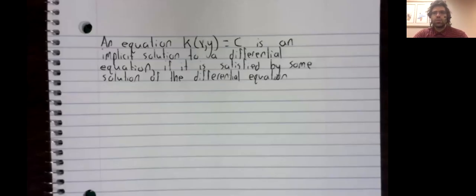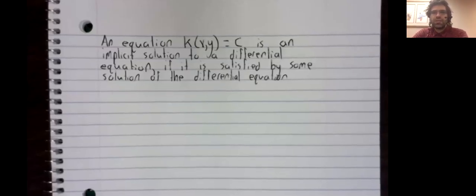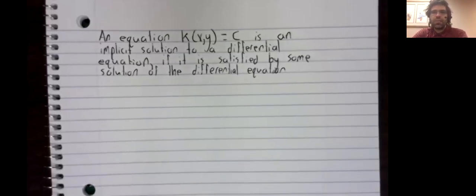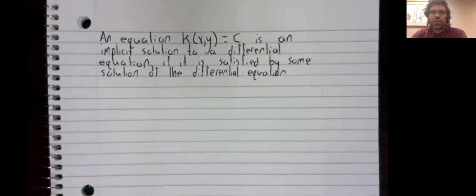We'll start by formalizing our previously rather vague definition. An equation k(x,y) = c is an implicit solution to a differential equation if it is satisfied by some solution of the differential equation.